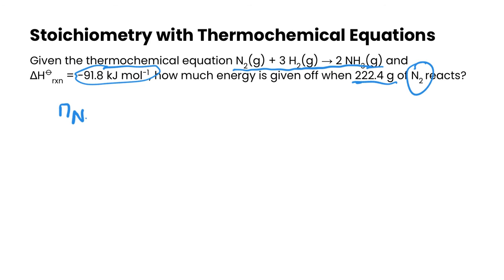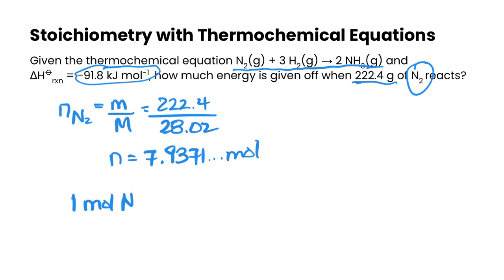So let's start how we always start. We need the number of moles of nitrogen. So that's going to be mass over molar mass. And so we got 222.4 over 28.02. So that gives us a number of moles of 7.9371 and so on moles. Now what we need to recognize here, setting up a ratio, is we can set it up where we've got for every one mole of N2, we're producing 91.8 kilojoules of energy.